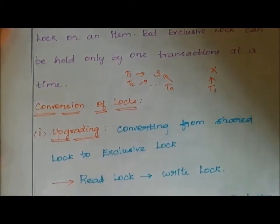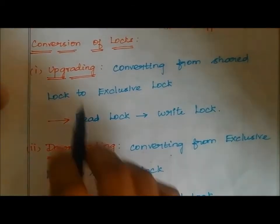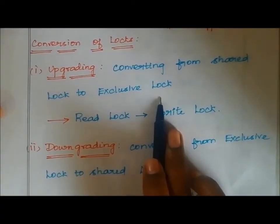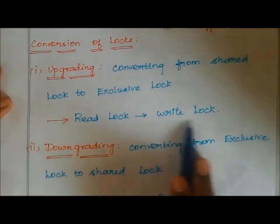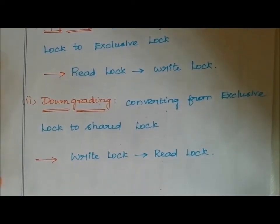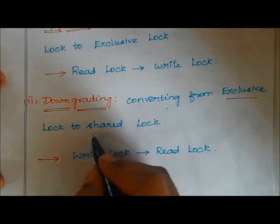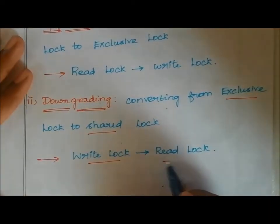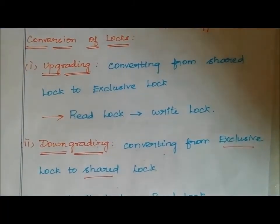Now let's see the conversions of locks. There are two types of conversion. First is upgrading conversion — that is, converting from shared lock to exclusive lock, which means converting from read lock to write lock. Second is downgrading conversion — that is, converting from exclusive lock to shared lock, which means converting from write lock to read lock.